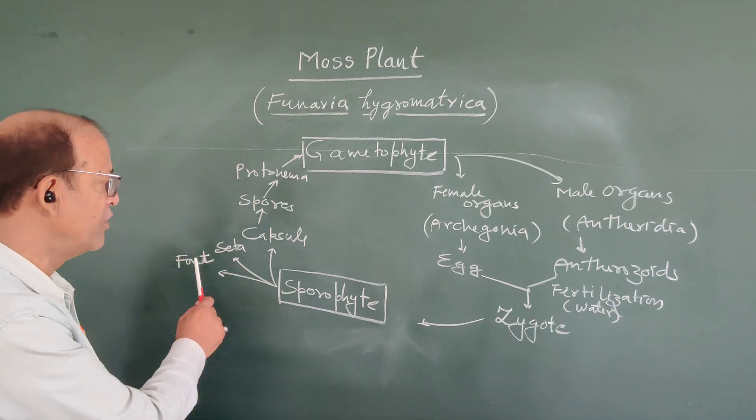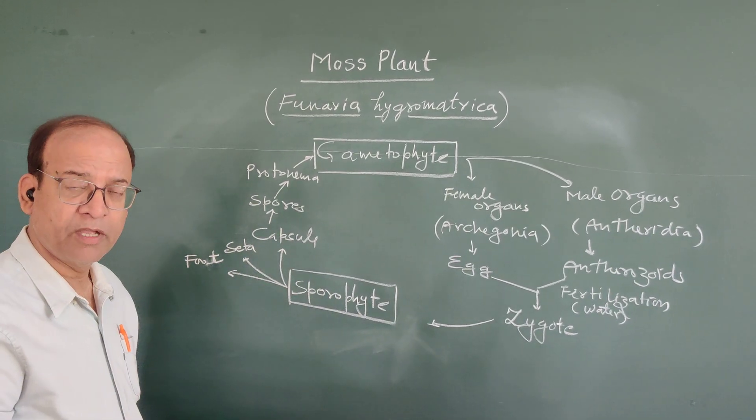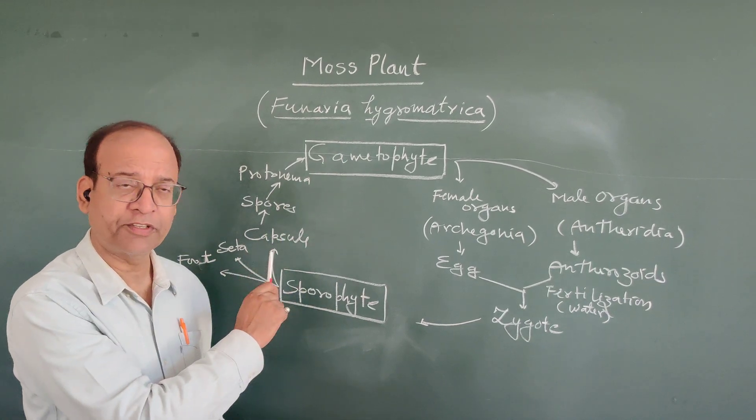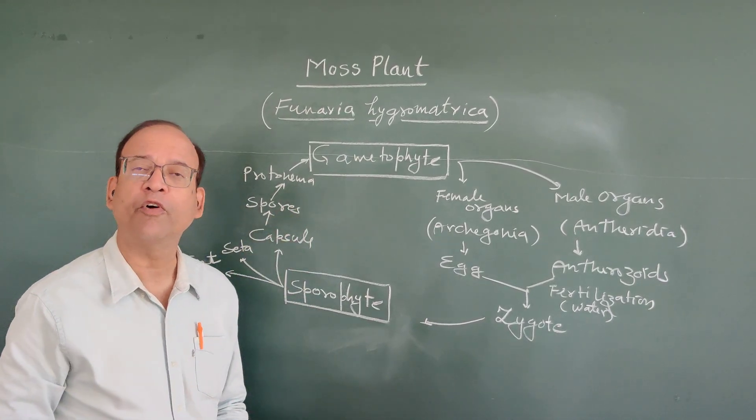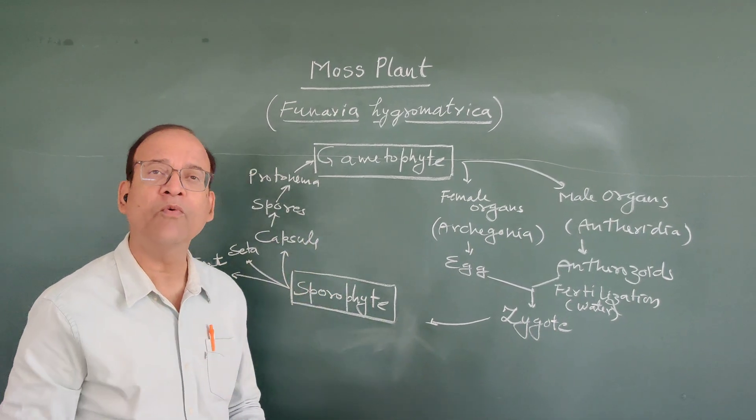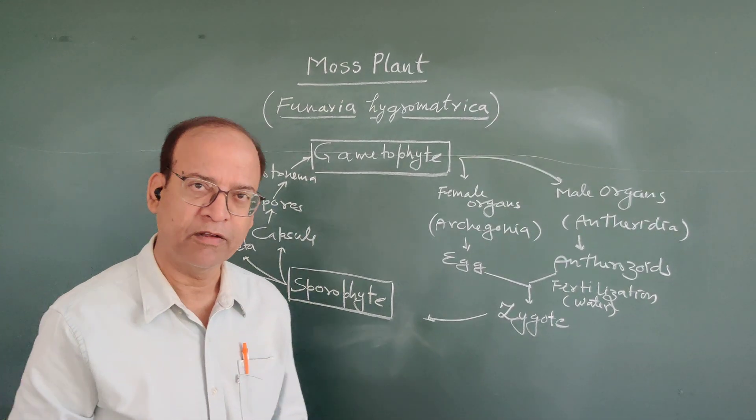Sporophyte is differentiable into foot, seta and capsule. Capsule is like a sporangia. Sporangia is filled with spores. Spores germinate to form protonema, and from this protonema, new gametophytic plants are formed.